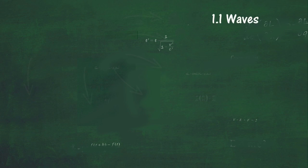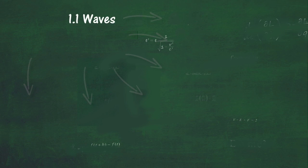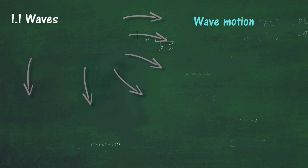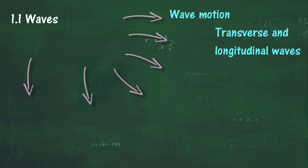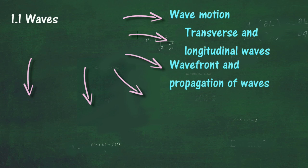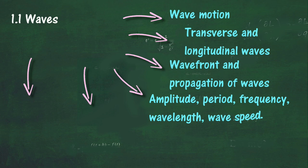In Section 1.1, we will learn about waves and the energy transferred through vibrations. At the end of this section, you should be able to: describe what is meant by wave motion; recognize that waves transfer energy without transferring matter; compare transverse and longitudinal waves and give examples of each; state what is meant by a wave front; state the direction of propagation of waves in relation to wave fronts; and define amplitude, period, frequency, wavelength, and wave speed.